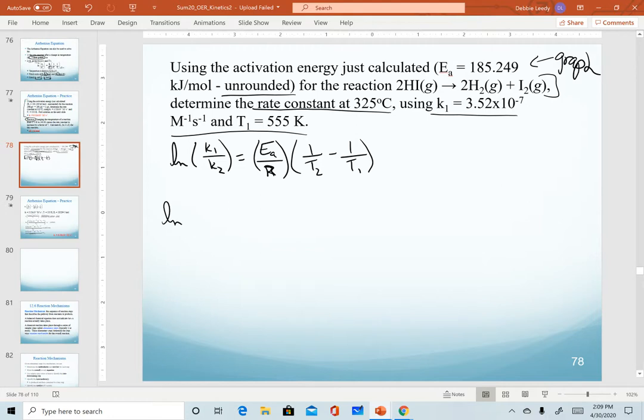So again, we're trying to find a new rate constant. So for K1, we are given the value of 3.52 times 10 to the minus 7, M negative 1 times S negative 1. Our unknown is the K2 value.